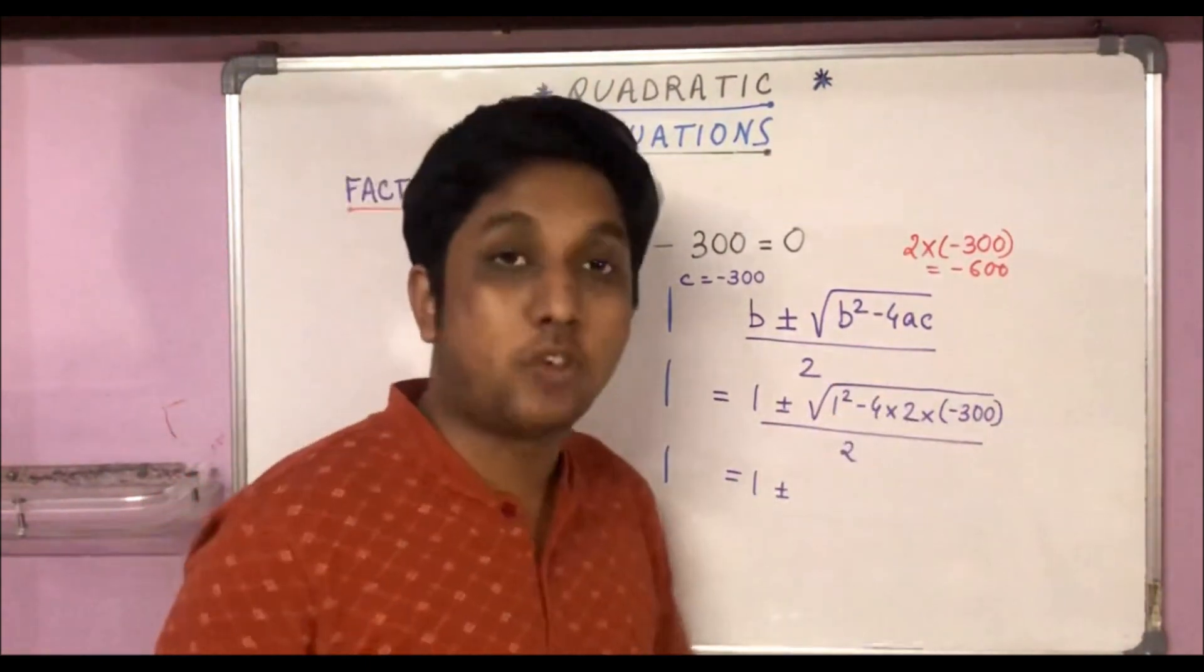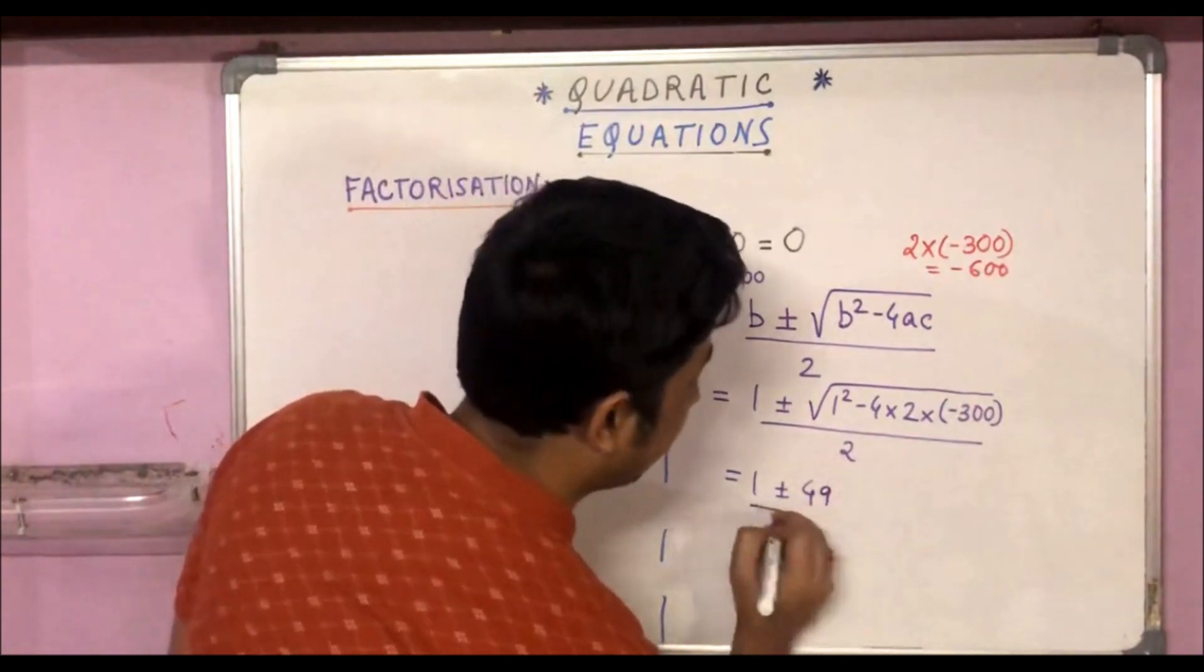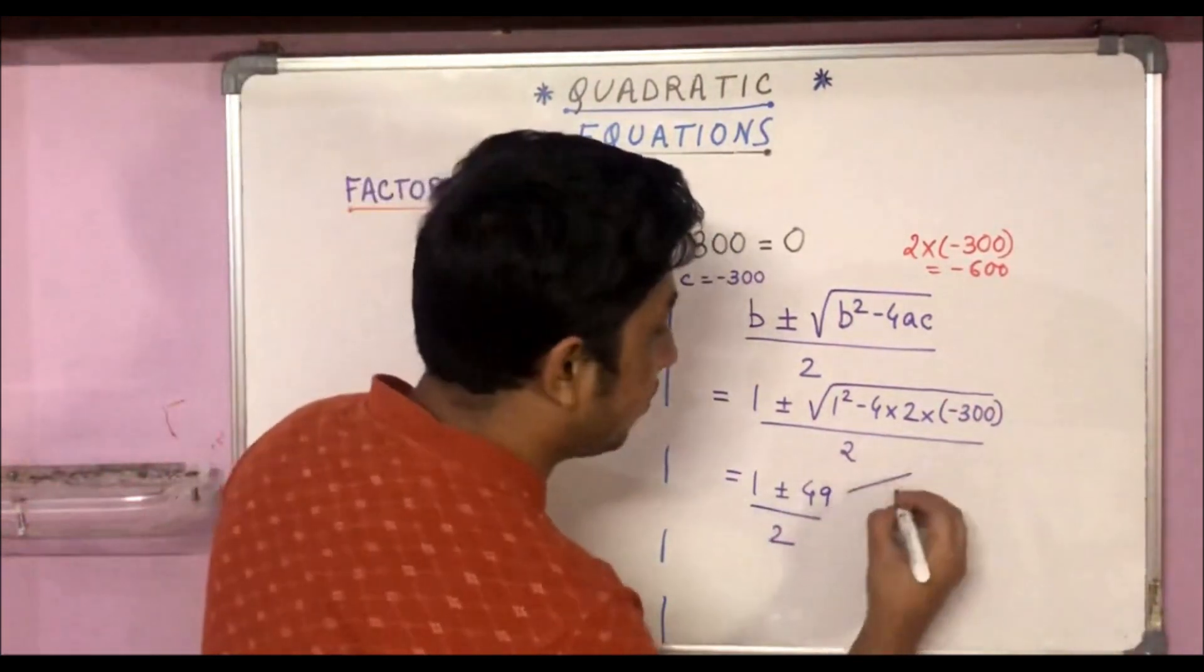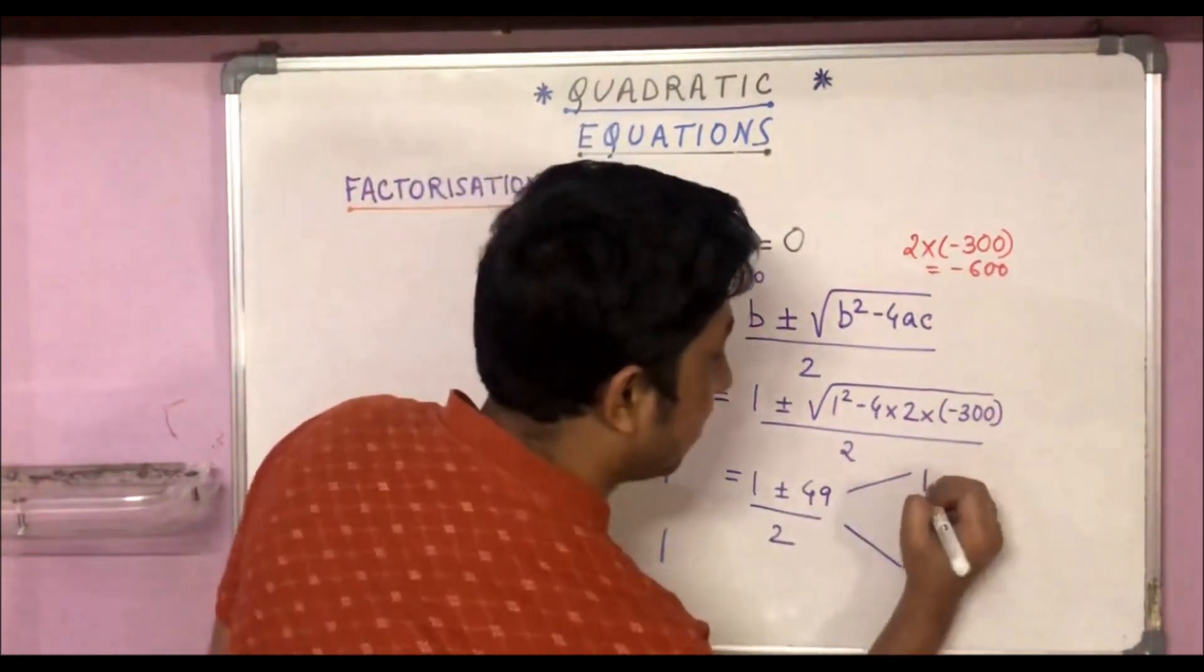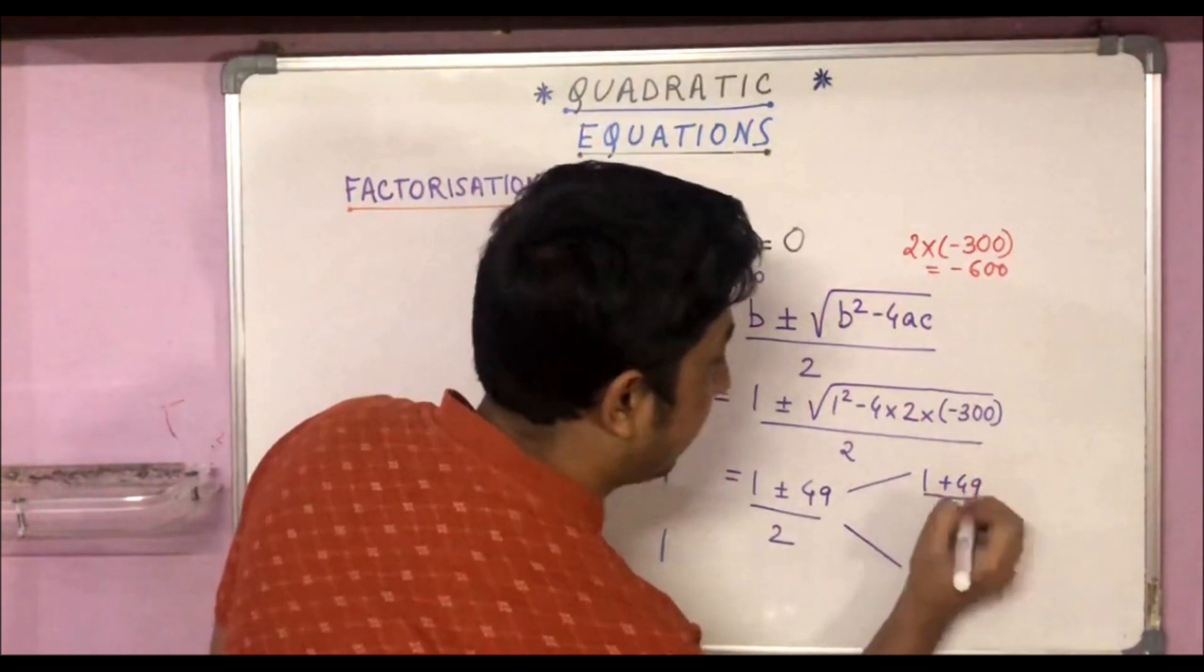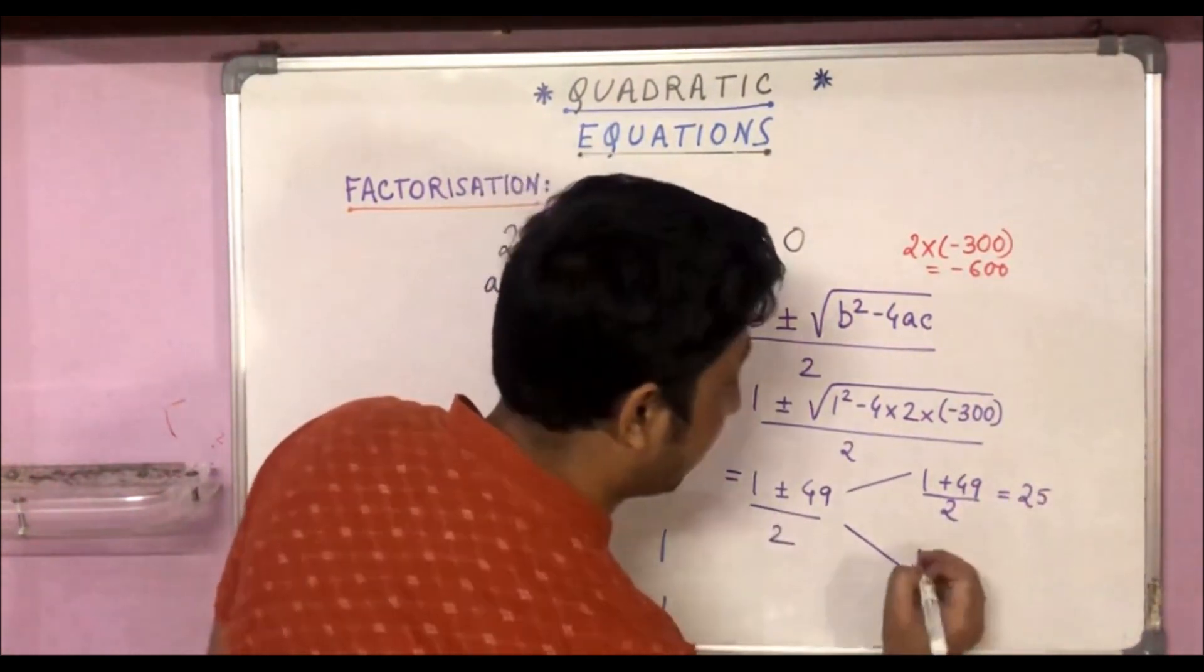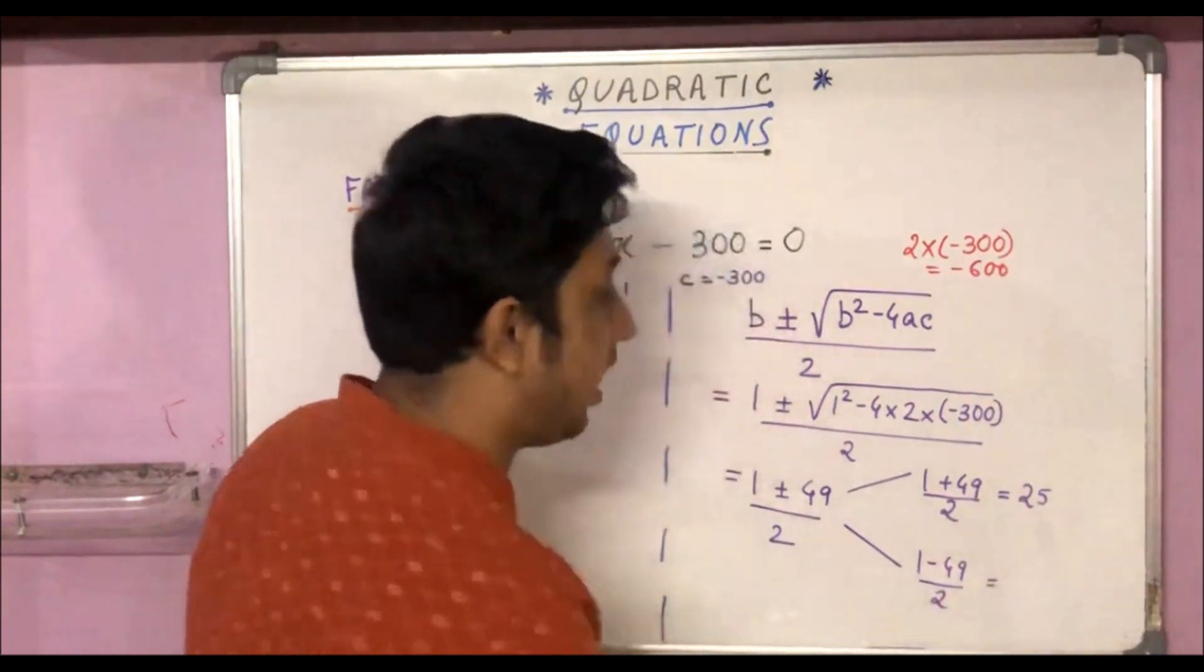And 1² is 1, so 1 + 2400 = 2401. The square root of 2401 is 49. So 1 plus minus 49 divided by 2. Now obviously we get two values, once by taking plus sign and once by taking minus sign. So 1 + 49 by 2 comes out to be 50 by 2, that is 25.